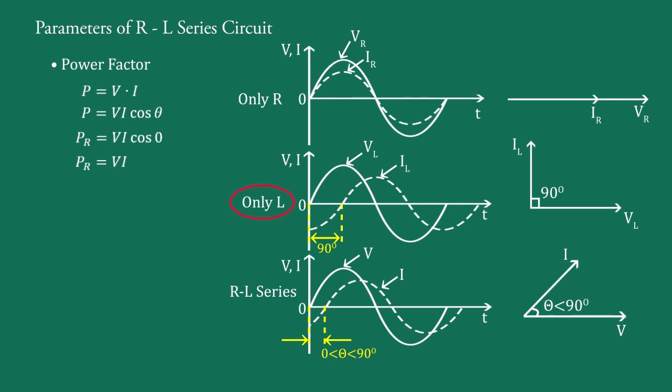In the second case, power PL equals VL into IL cos 90, because here theta is 90 degrees, therefore cos 90 equals 0, and therefore this power PL equals 0.